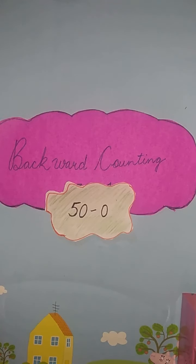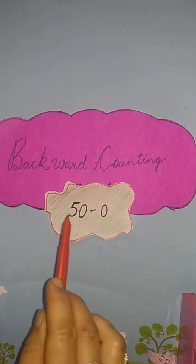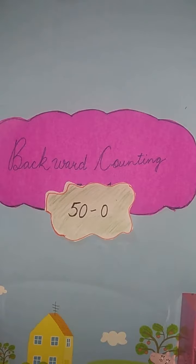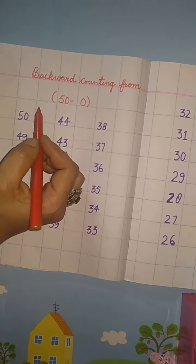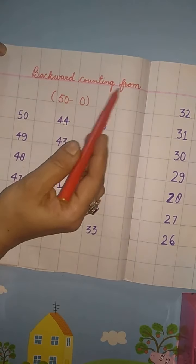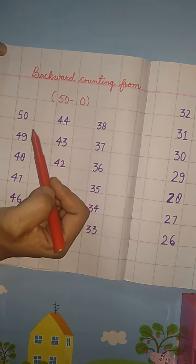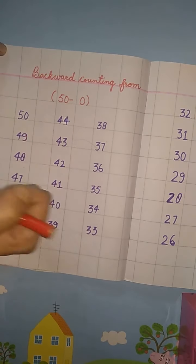Dear kids, as we have done backwards counting from 30 to 0, now today we will do it from 50 to 0. So let's start. Kids, I have already written backward counting from 50 to 0. You all please read aloud with me.